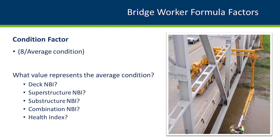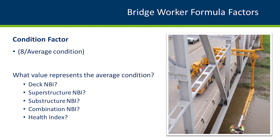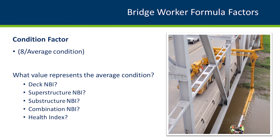The condition factor is based on the average condition of structures within a maintenance area or district, compared to the ideal condition rating of eight. There's a question around what represents that average condition rating — is it the DEC-NBI? A lot of our maintenance activities and preservation actions are related to the DEC-NBI, such as when you might overlay or patch. But there are other considerations, since we perform maintenance on many different components and elements of the bridge. Should it be just the DEC-NBI, a combination of NBI ratings, or some other condition or health metric?